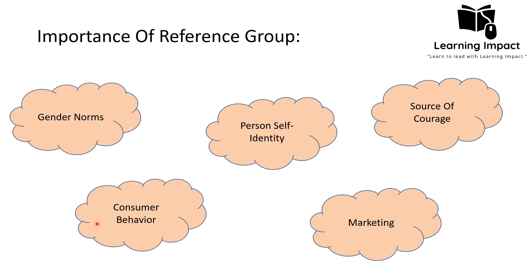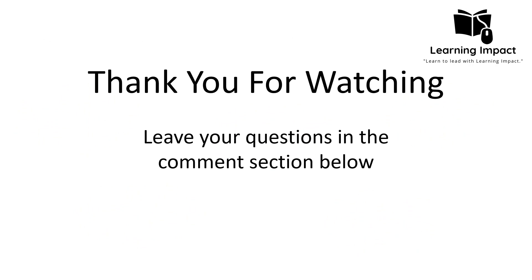Reference groups also affect consumer behavior, acting as opinion leaders that impose and reimpose consumer behaviors through social proof, setting norms, information influence, and identification aspirations. In marketing, advertisements use reference groups to set standards for individuals, affecting their decision-making. Overall, reference groups affect our society, individual capabilities, and the decisions individuals make about themselves.